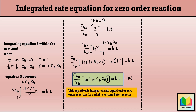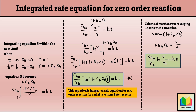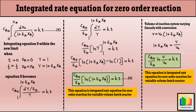As we know, in a variable volume batch reactor the volume of the reaction system varies linearly with conversion. Hence we have V equals V0 into (1 plus epsilon_A X_A), from which we can write: (1 plus epsilon_A X_A) equals V divided by V0. Substituting V/V0 in place of (1 plus epsilon_A X_A) in equation 6, we get: C_A0 divided by epsilon_A, into ln(V/V0), equals K into T. Hence this is another form of the integrated rate equation for zero order reaction for variable volume batch reactor.